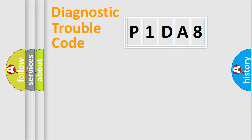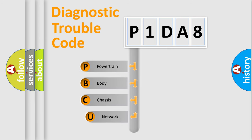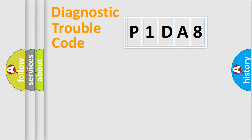Let's do this. First, let's look at the history of diagnostic fault code composition according to the OBD2 protocol, which is unified for all automakers since 2000. We divide the electric system of an automobile into four basic units: Powertrain, Body, Chassis, and Network. This distribution is defined in the first character of the code.